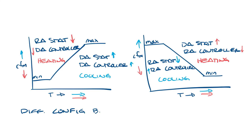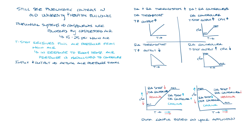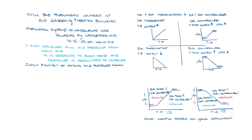You would use the different configurations based on your application, much like how you want some things to fail open or fail closed. You'll want some things to be triggered by an increase in thermostat output and other things by a reduction in thermostat output. Older universities and hospital buildings still use pneumatic controls because they often have the main air systems already in place and their facility staff can work on these boxes easily.